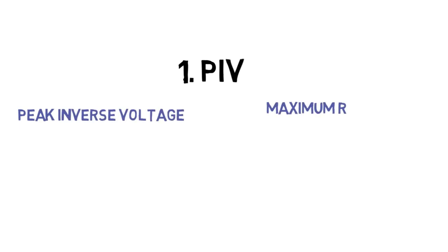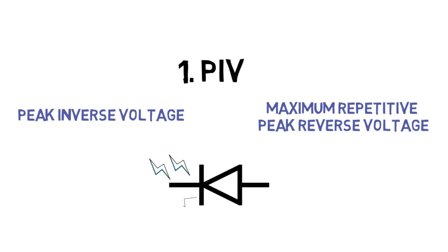For selection of rectifier diode, first we need to consider is PIV, which stands for peak inverse voltage, also known as maximum repetitive peak reverse voltage. It is a maximum voltage across non-conducting rectifier diode. That means when the diode is reverse biased, how much voltage it can block. When the voltage exceeds this value, then diode may damage and can go into breakdown region.